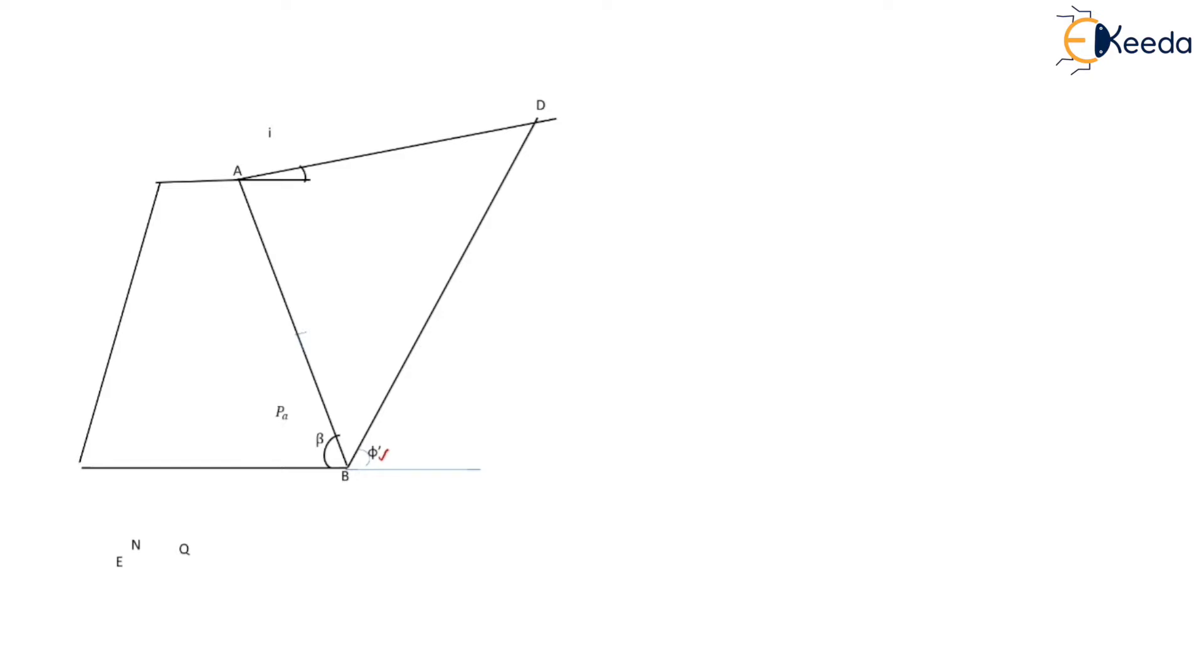Then another line BL is drawn at an angle psi with the line BD, means angle between BD and BL is psi. So here psi is equal to beta minus delta. Just like the case of Raven's construction, here also psi is equal to beta minus delta, where beta is the inclination of back with the horizontal and delta is the inclination of active earth pressure with the normal. So this line is normal to the back of the retaining wall. Here delta is also called as angle of friction between the wall surface and soil.